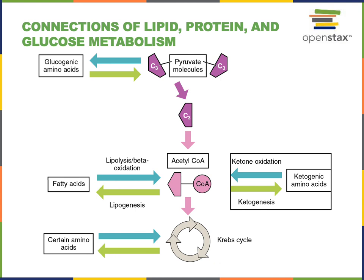To summarize the connections between lipid, protein, and glucose metabolism: gluconeogenesis can produce new glucose molecules from the carbon skeletons of amino acids that are generated in deamination, from glycerol that's generated by lipolysis of triglycerides, and also from lactic acid generated by anaerobic cellular respiration. So while amino acids can be converted to glucose, glucose cannot be converted to amino acids. Nitrogen is required in order to produce those amino acids, and amino acids are one of the essential nutrients that we must obtain from the diet.